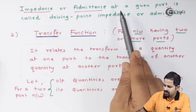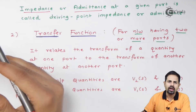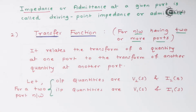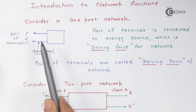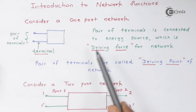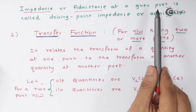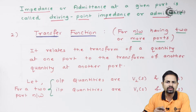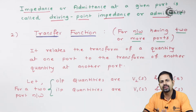Impedance or admittance at a given port is called driving point impedance or driving point admittance, because at that particular port we calculate that impedance or admittance. The pair of terminals connected to the energy source — the driving force — gives us this name. We will see what transform impedance looks like for resistance, inductor, and capacitor in another video. This is just the introduction part.